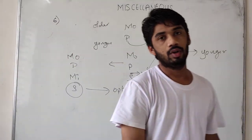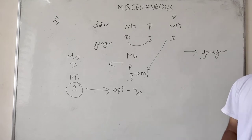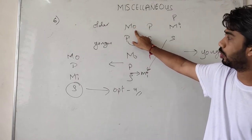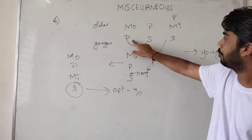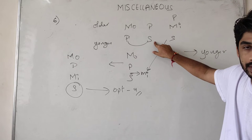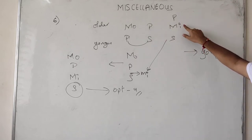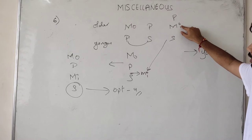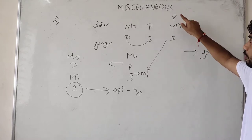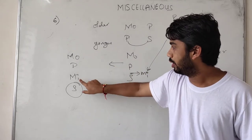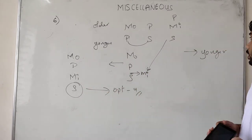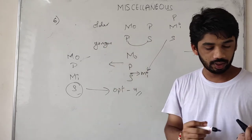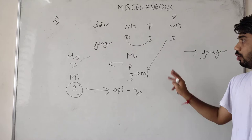In this way you have to solve this type of problem. When you go to the exam you have to solve this problem so that you can come up with the solution. The order is Mohan, Praveer, Meer, and Suresh. The youngest is Suresh. Note this and I will go to the next problem.